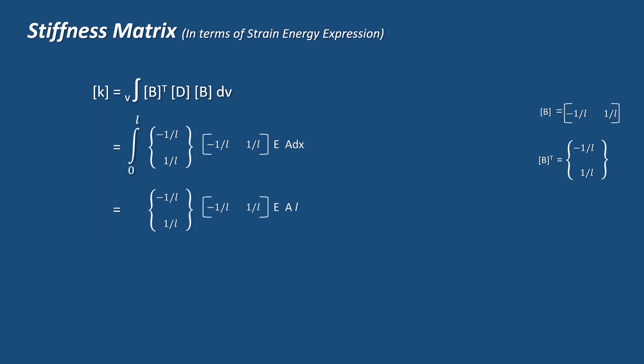After integrating and applying limits, we get minus 1 by L, 1 by L into minus 1 by L, 1 by L into E A L. Multiplying both the row and column matrices, we get E A L into 1 by L square minus 1 by L square minus 1 by L square, 1 by L square. Taking 1 by L square out of the matrix, we get stiffness matrix K equal to E A by L into 1 minus 1 minus 1, 1.